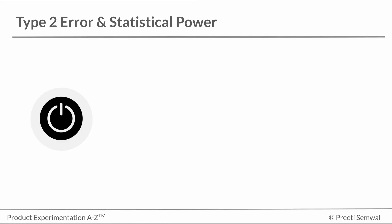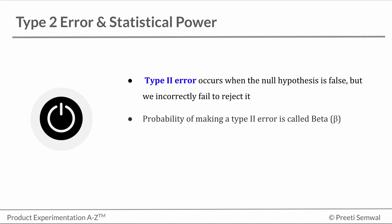So we discussed type 2 error a couple of lectures back. Type 2 error occurs when the null hypothesis is false, but we incorrectly fail to reject it. To put this in A-B testing terms, a type 2 error would occur if we concluded that the mean of variation B was the same as the mean of variation A when it actually was not.